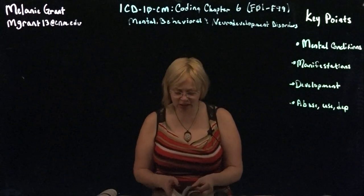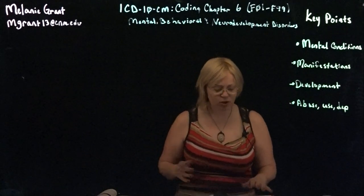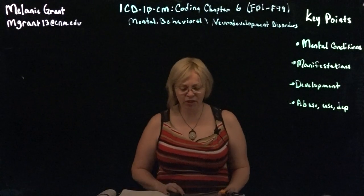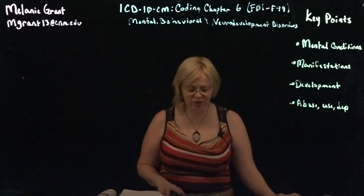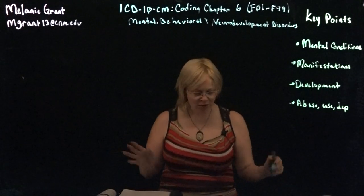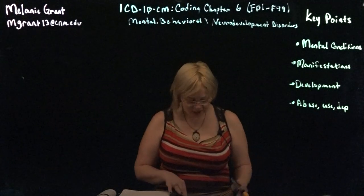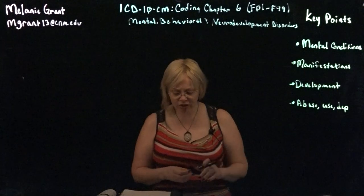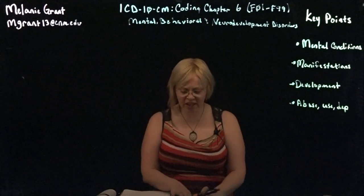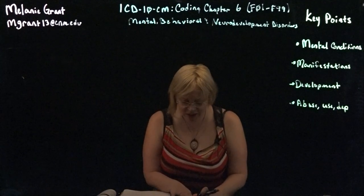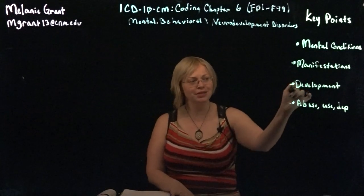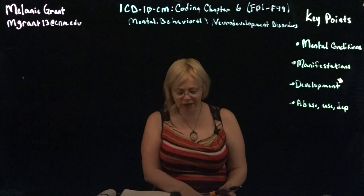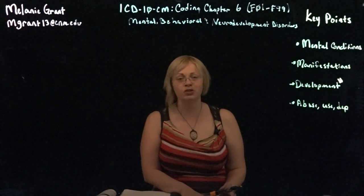The first thing I like to look at every time I look at a new chapter is the very beginning of the coding chapter that I'm in. For mental health, behavioral, and neurodevelopmental — I'm just going to call it mental health because that summarizes it for us — we find this on page 539. In mental health there are includes and excludes-two notes, which indicates that it includes any disorders of psychological development. That's our key word. And it excludes symptoms, signs, and abnormal clinical lab findings not elsewhere classified.